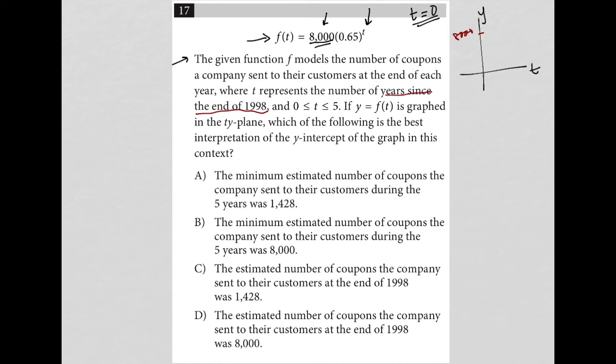So which is the best interpretation of the y-intercept? Choice A says the minimum estimated number of coupons during the five years - absolutely not. Choice B also says the minimum during the five years - no. Although 8,000 is the right number, it's just not during the five years.